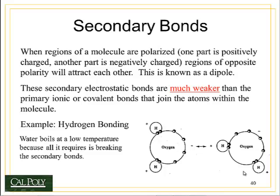Hydrogen bonding is probably most familiar to you, as you probably covered it in chemistry class. A good example of hydrogen bonding is water. The water molecule consists of one oxygen atom and two hydrogen atoms. Because of the covalent bonding and the bond directionality associated with covalent bonding, a water molecule consists of a negative charge on one side of the molecule and two positive charges on the other side of the molecule.